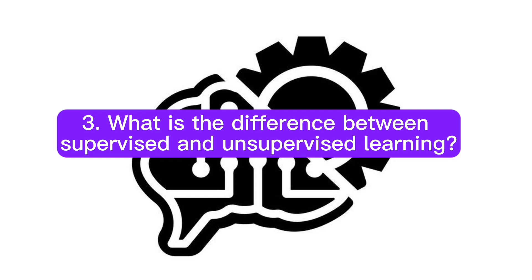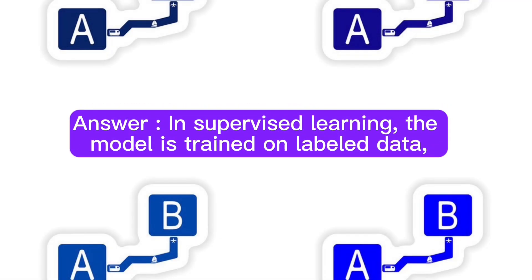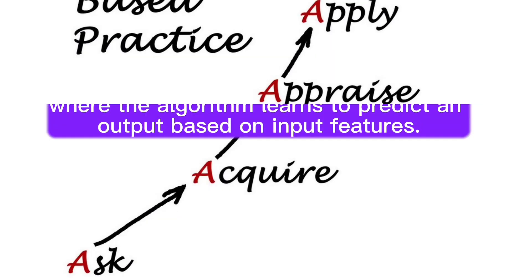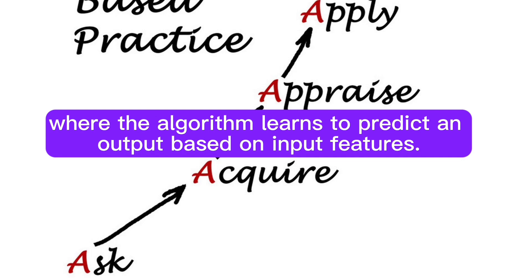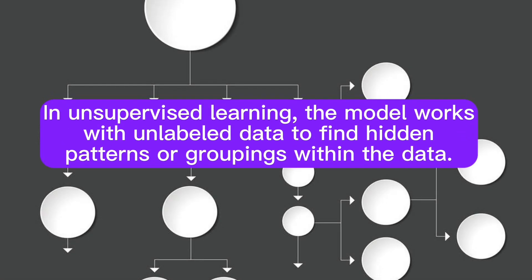Question 3: What is the difference between supervised and unsupervised learning? Answer: In supervised learning, the model is trained on labeled data where the algorithm learns to predict an output based on input features. In unsupervised learning, the model works with unlabeled data to find hidden patterns or groupings within the data.